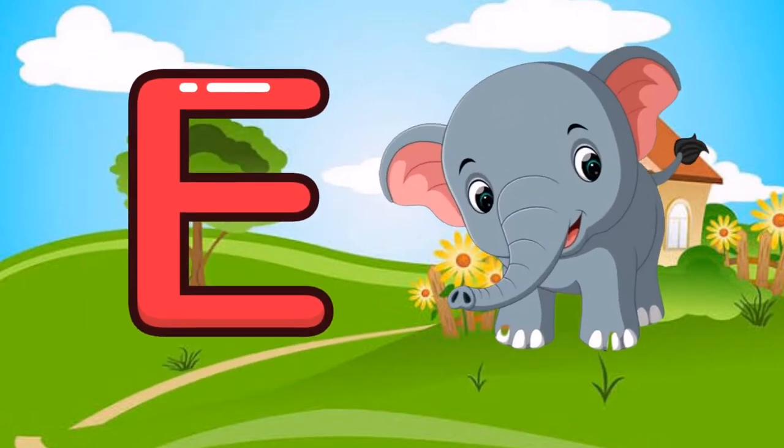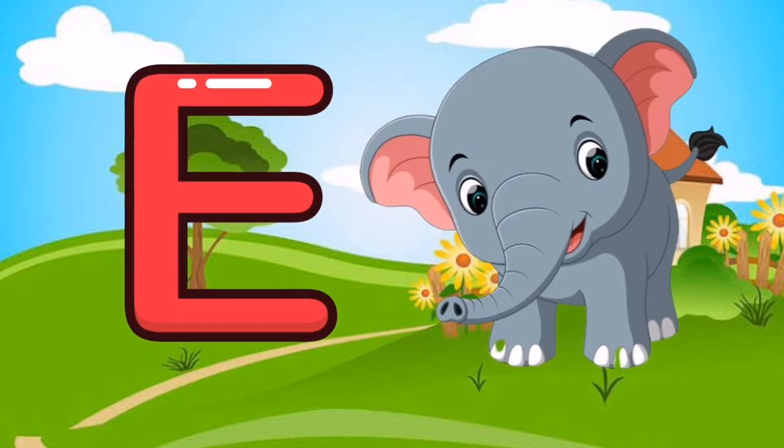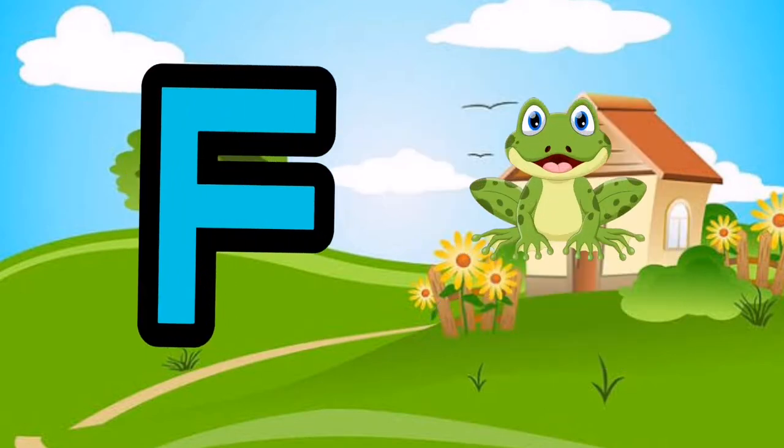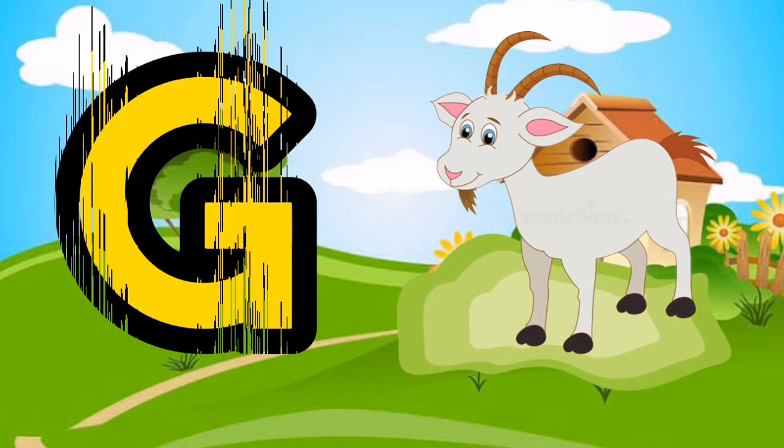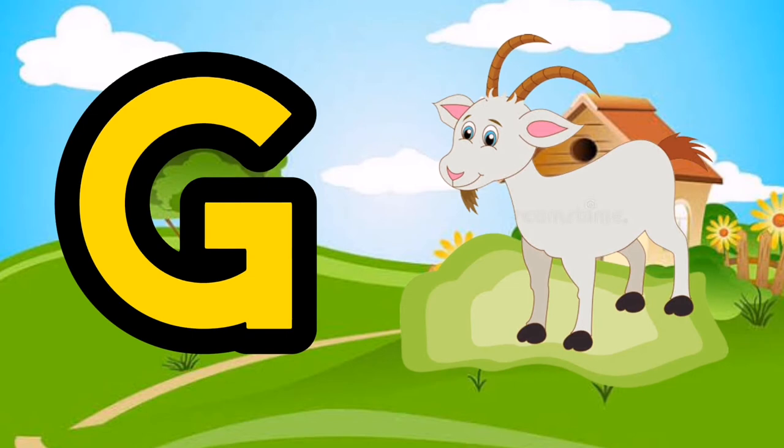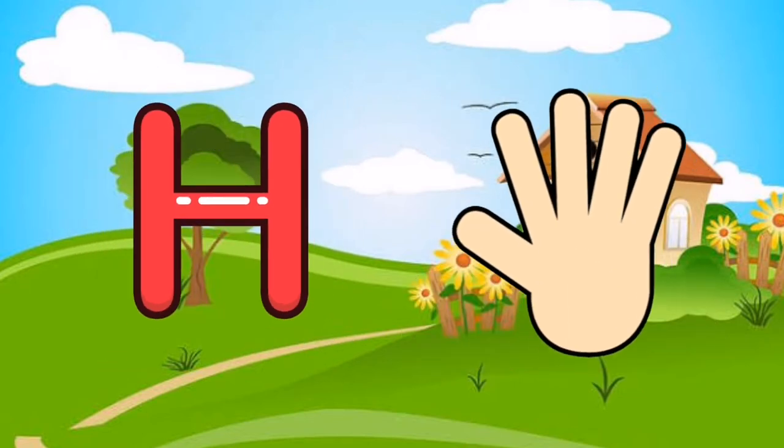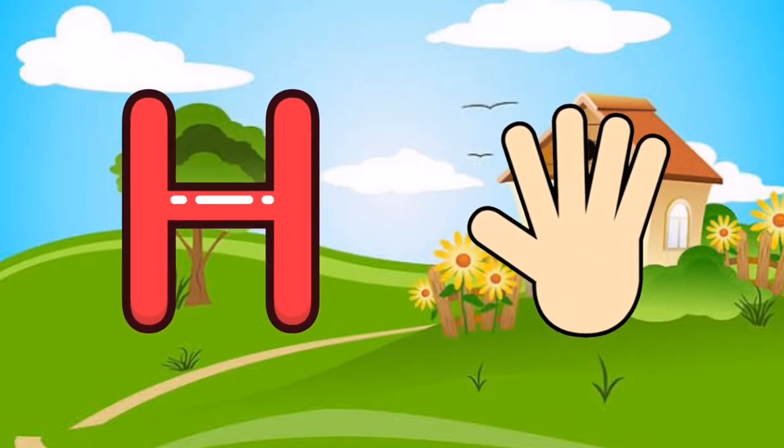E is for Elephant, E-E-Elephant. F is for Frog, F-F-Frog. G is for Goat, G-G-Goat. H is for Hand, H-H-Hand.